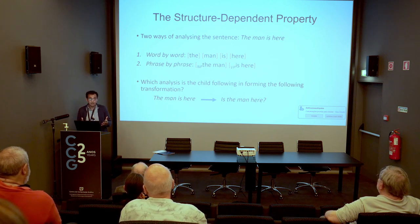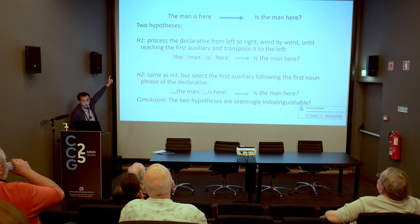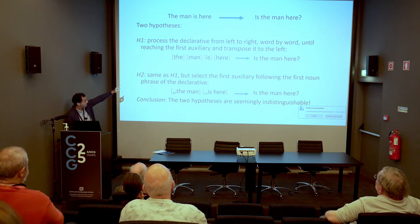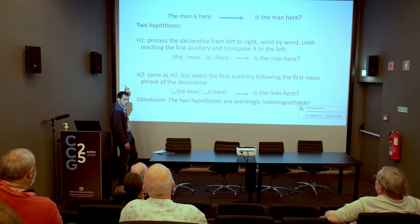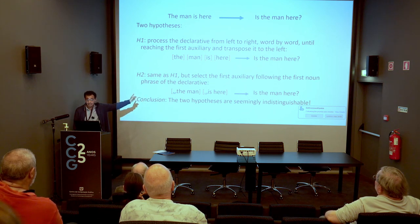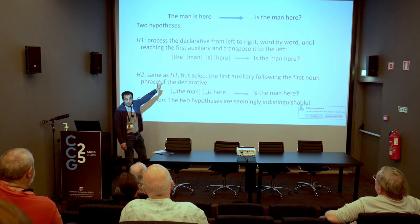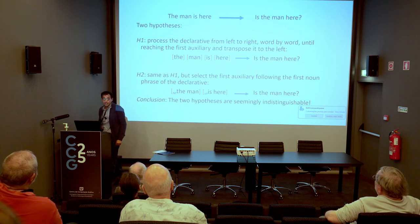We can formulate two hypotheses. Hypothesis one: process the declarative from left to right, word by word, until reaching the first auxiliary and transport it to the left — 'The man is here' becomes 'Is the man here?' This hypothesis predicts the right outcome. Hypothesis two: select the first auxiliary following the first noun phrase of the declarative, not the first auxiliary per se, but after the first noun phrase. Again, this predicts the same outcome, so the two hypotheses seemingly are the same — we cannot distinguish between them.